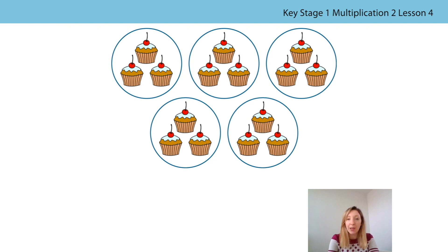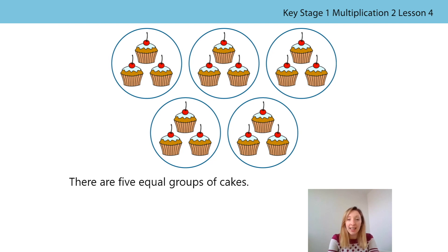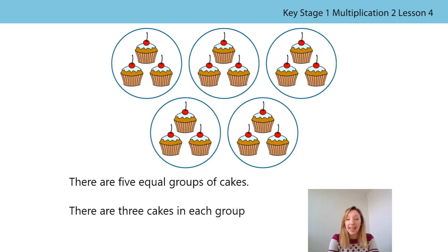Here are some cakes. The cakes have been grouped. These cakes have had circles drawn around them — they haven't been put onto plates, and that's okay, because remember we don't always need to move objects to group them; we can draw around them. We did this with our potato stamper pictures and when we drew around sweets in earlier lessons. How many equal groups are there? Press pause on the video and count how many equal groups you can see. How many equal groups did you see? That's right, there are five equal groups of cakes. Fantastic. How many cakes are there in each group? Press pause on the video and count. There are three cakes in each group. And remember, we didn't need to count each group because we can see that there are the same number of cakes in each group. Brilliant.